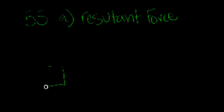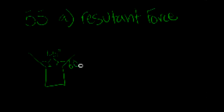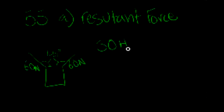The traffic light is hanging from two cables, both at 45 degree angles. There is 60 newtons of tension on each cable. The function sine is opposite over hypotenuse. The hypotenuse of each cable is 60 newtons.